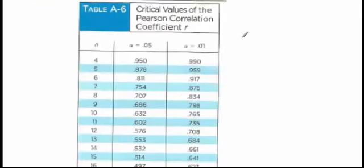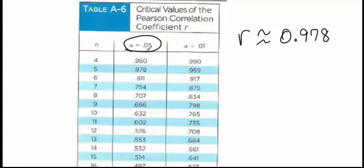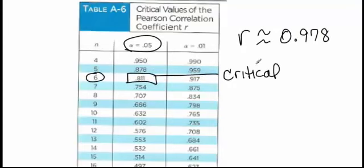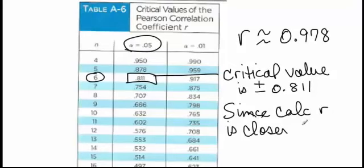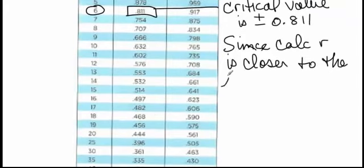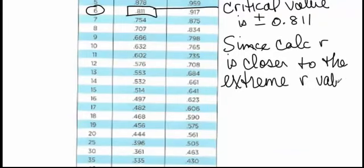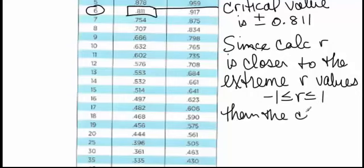We take our calculated r, which is approximately 0.978, and we compare it. Remember, we're going to use this column for comparison. N is 6. This is called my critical value. You'll know more about what those are later in the semester. Critical value is plus or minus 0.811. Since the calculated r is closer to the extreme value for r. And recall that that is negative 1 is less than or equal to r is less than or equal to 1. Then the critical value, we are going to conclude